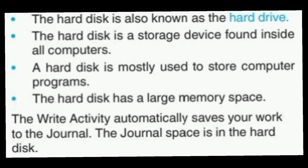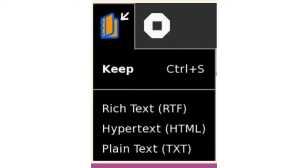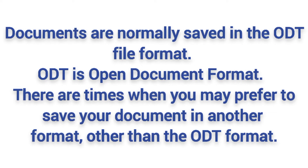The Write activity automatically saves your work to the journal. The journal space is the hard disk. Look at this picture — it symbolizes the hard disk which is inside all computers. When you try saving a document in Write activity, it asks you whether you want to save it in rich text format, hypertext, or plain text.